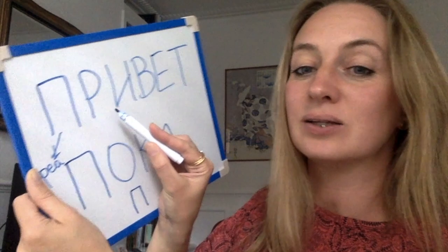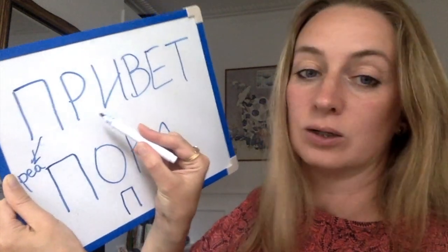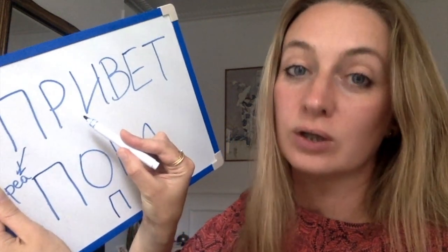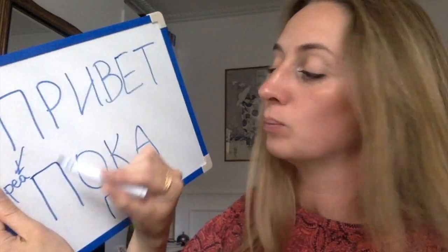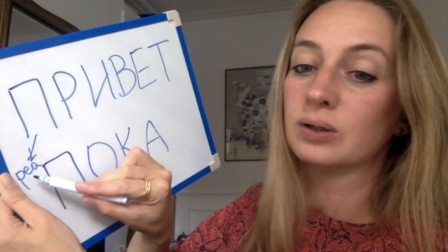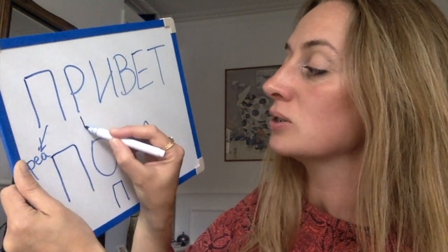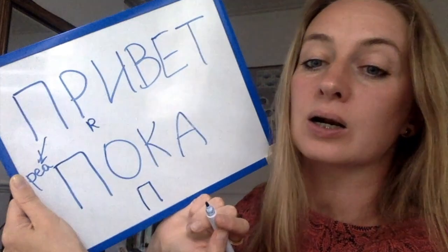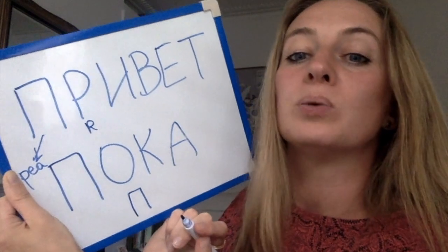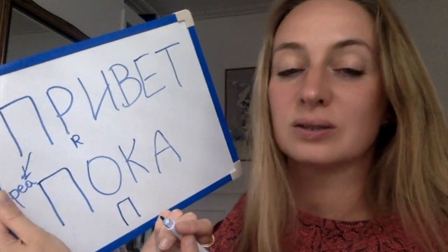The second letter is Р, which actually looks like English P, but this is the letter R. Привет.